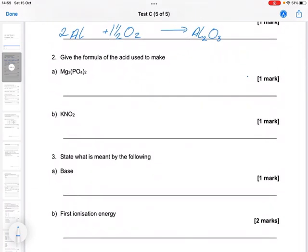Give the formula of the acid used to make the following. So I've got, here's one of the ones we need to know. That's phosphate, which is 3 minus, which means I would need 3 hydrogens on there. This one is unfamiliar, but if K is 1 plus, then NO2 is 1 minus, so I'd need 1 hydrogen on there.